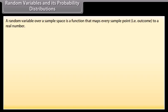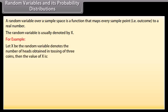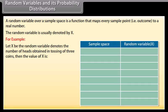Random Variables and Probability Distributions: A random variable over a sample space is a function that maps every sample point (outcome) to a real number. The random variable is usually denoted by X. For example, let X denote the number of heads obtained in the tossing of 3 coins. For sample space TTT, the value of the random variable is 0.